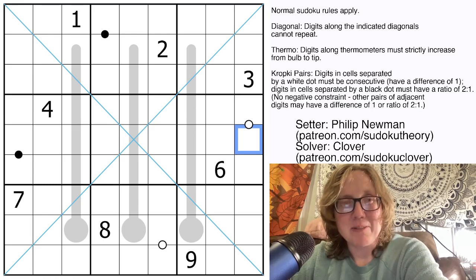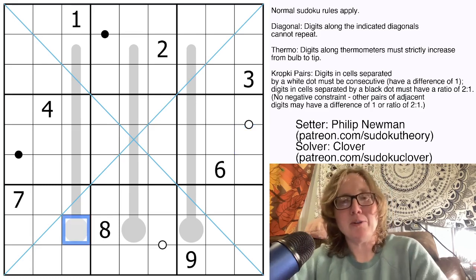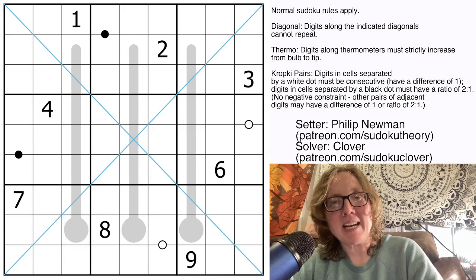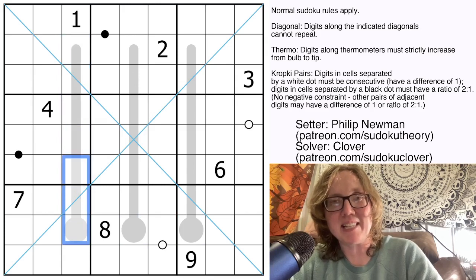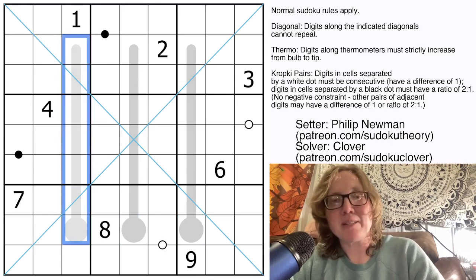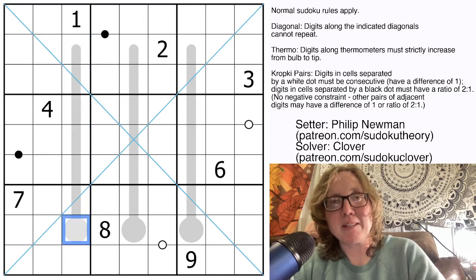And the first thing that stands out to me in this puzzle is these very lengthy thermometers. Because I know that if I have a thermometer of length N, and I talked about this in a previous video, in this case, these are of length 7. The number of degrees of freedom that I have in each cell is going to be 9 minus that length. So in this case, 9 minus 7, I'm going to have 2 degrees of freedom, meaning that I have to pencil mark three digits into each cell.